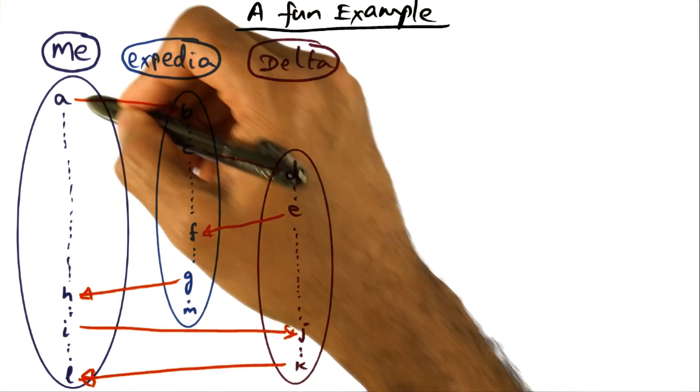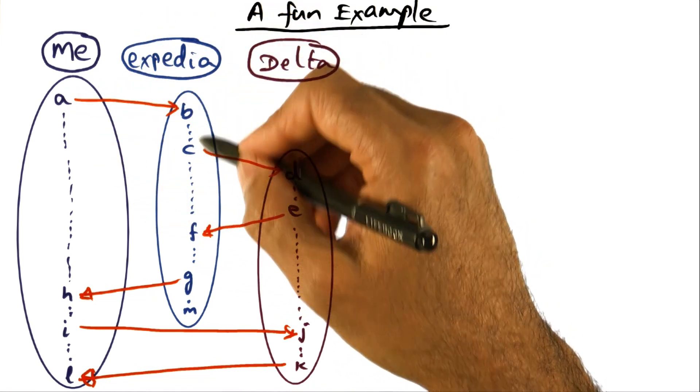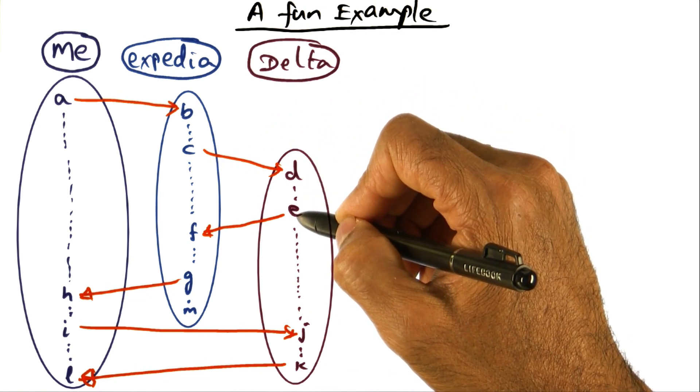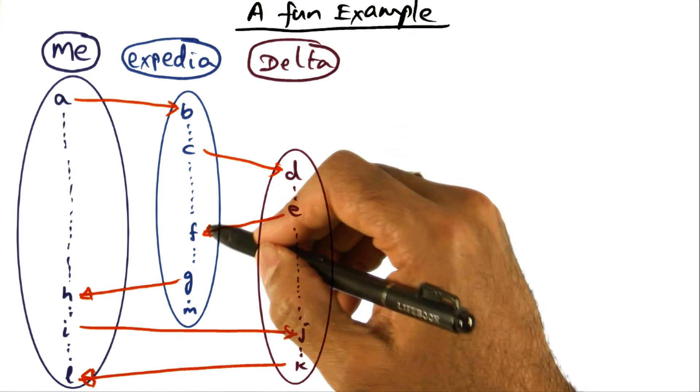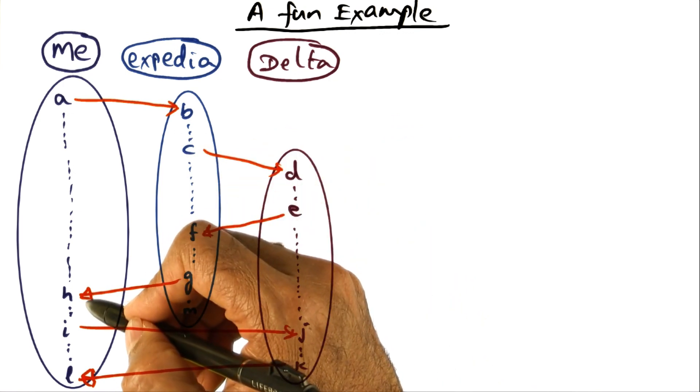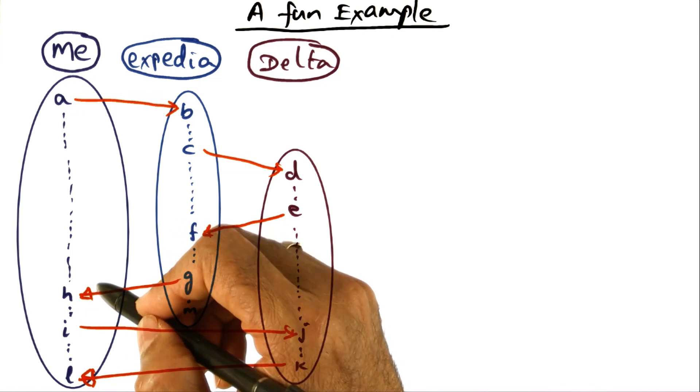So all of these are messages. A to B is a message, A is the sending of the message, B is the receipt of the message. And C is the sending of the message from Expedia to Delta. E is the confirmation that my reservation is in from Delta to Expedia. And finally, G to H is the message from Expedia to me saying that yes, you have your reservation, you can go to India in December. That's good.